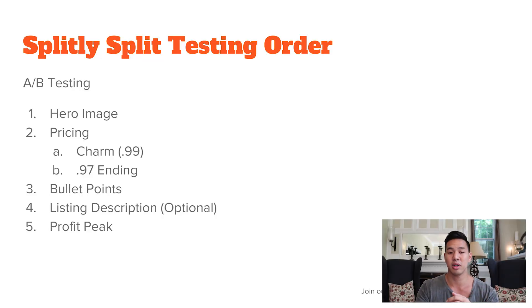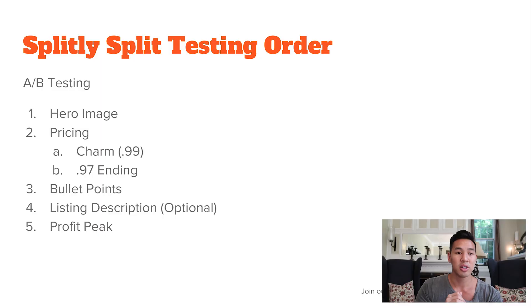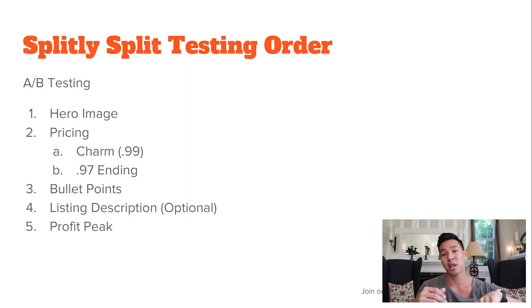The second thing I test is pricing — the charm method, testing between 99 cents and 97 cents. Then the next thing to test is bullet points — ideally one at a time, though sometimes I test multiple bullet points at once because I'm impatient. Ideally you should only change one line at a time to see how it converts. Then I test the product description section. If you're brand registered, I highly recommend testing the Enhanced Brand Content — switching images out, switching the text out, and seeing what happens.